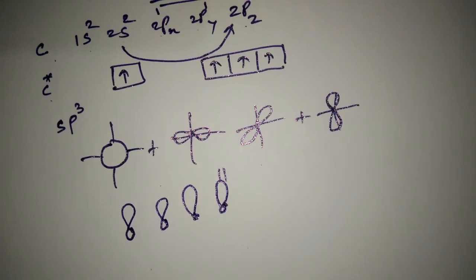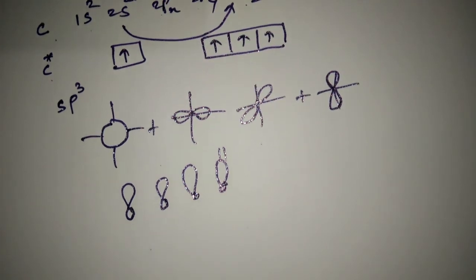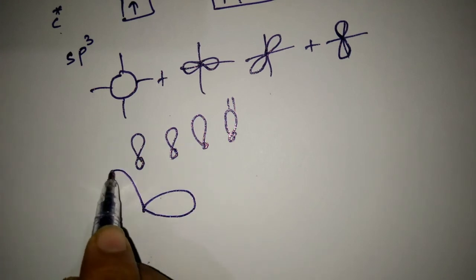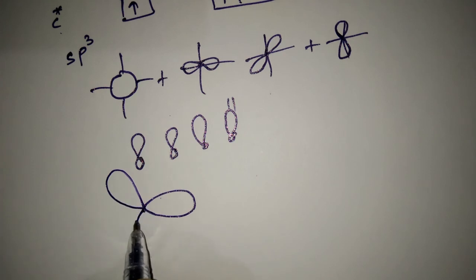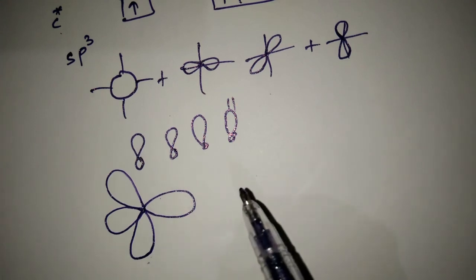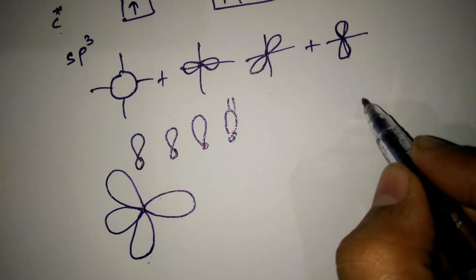These four orbitals will again arrange according to theory, maximum distance between them. So arrange in tetrahedral manner, tetrahedral shape. This is the tetrahedral shape of four hybrid orbitals. There are two carbons.